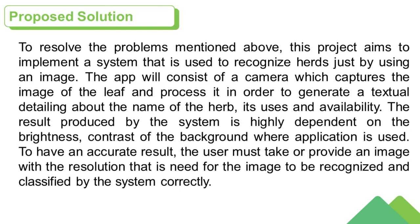To resolve the problems mentioned above, this project aims to implement a system that is used to recognize herbs just by using an image. The app will consist of a camera which captures the image of the leaf and processes it in order to generate a textual detailing about the name of the herb, its uses and availability. The result produced by the system is highly dependent on the brightness and contrast of the background where the application is used. To have an accurate result, the user must take or provide an image with the resolution needed for the image to be recognized and classified by the system correctly.